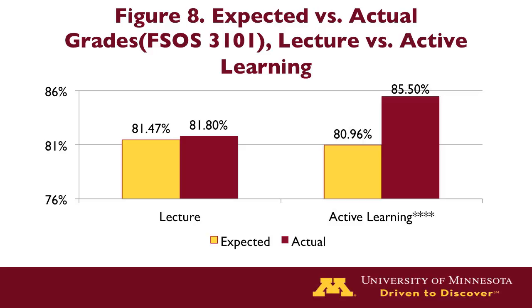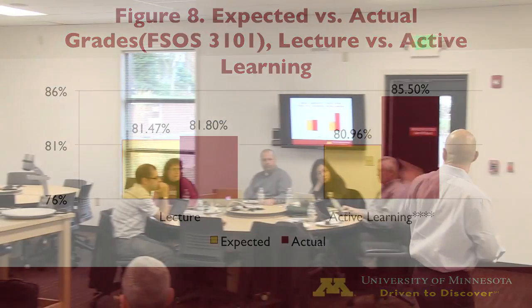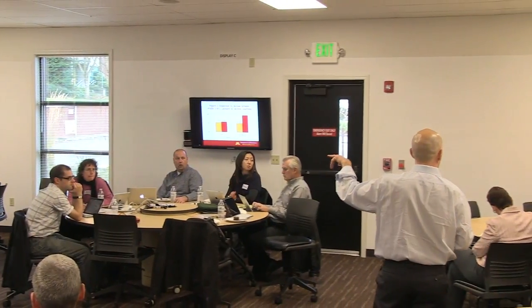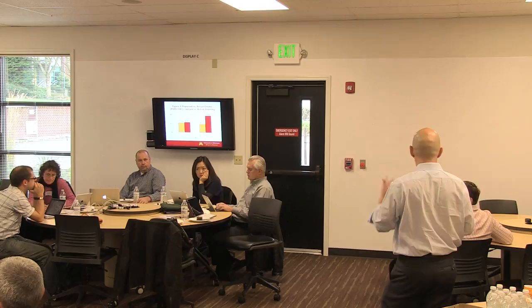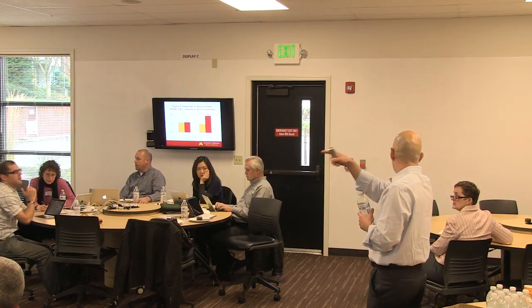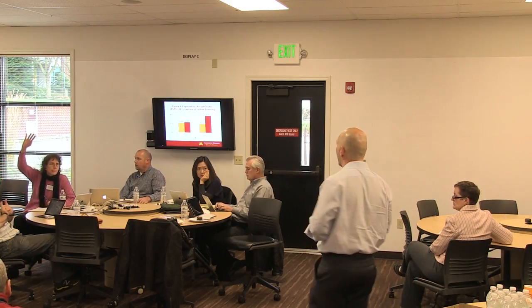Question from the audience: Do some students benefit more? Is there a larger gap between expected and observed for weaker or stronger students? For this one, all four quartiles benefited — it was one of those rising tides lifts all ships outcomes. For the others, there was no clear pattern. In one of them, there was actually no significant difference across all four quartiles. In one of them, there was a middle section that improved significantly more, but there's no real good way to explain why that second quartile should have that.